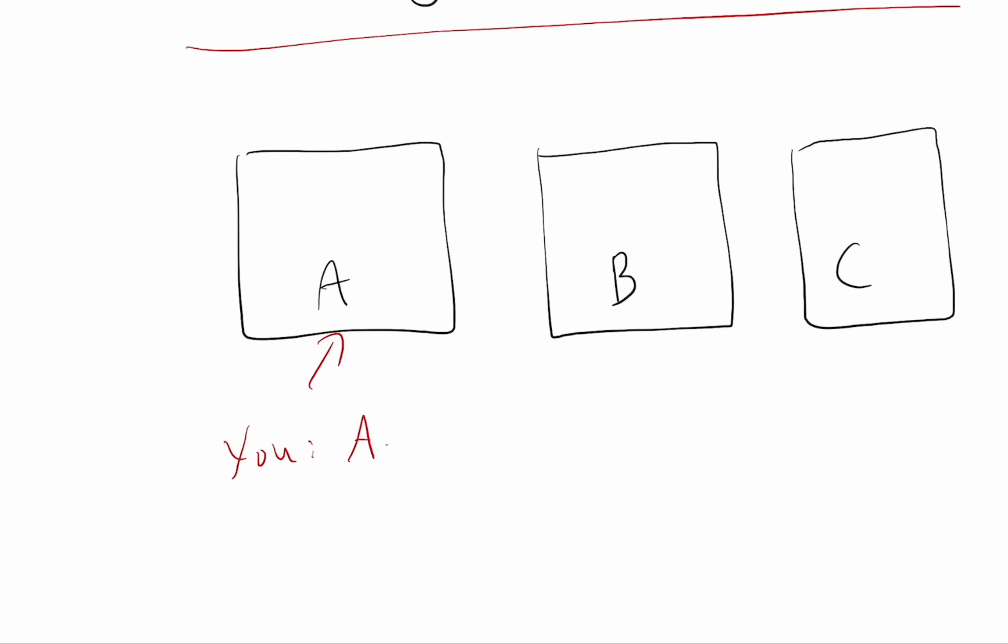Isn't there still like a 50-50 chance that it's behind A versus C? Because initially, you had a one-third chance of getting it right, because it's one out of three, and after B was opened up, now there's two doors remaining. So isn't it still just like one out of two? So isn't it now 50%?